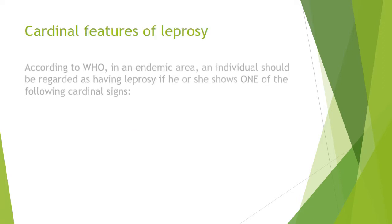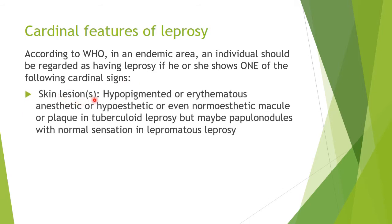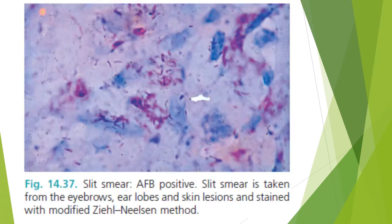According to WHO, in an endemic area an individual should be regarded as having leprosy if they show one of the following cardinal signs: skin lesions — typically hypopigmented or erythematous, anesthetic or hypoesthetic, even normoesthetic macule or plaque in tuberculoid leprosy, but may be papulonodules with normal sensation in lepromatous leprosy — with or without thickened nerve knobs, and a skin smear positive for acid-fast bacilli. The slit smear is taken from the eyebrows, ear lobes, and skin lesions and stained with modified Ziehl-Neelsen method.